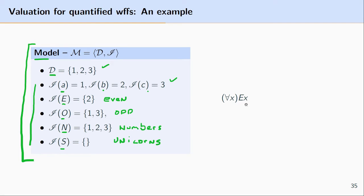Let's take AXEX, that is the universally quantified XEX. This says that every item in the model is in the interpretation of E. To see if this is true, we look to see if every item in the model is in the interpretation of E. We find that this is not the case. The domain consists of numbers one, two, and three, but the interpretation of E only picks out the evens — that is, number two. So there is at least one item not in the evens, which is either one or three. Therefore, AXEX is false.